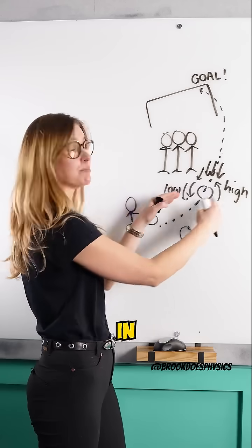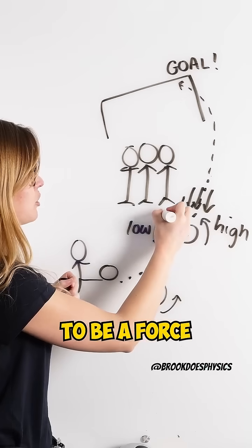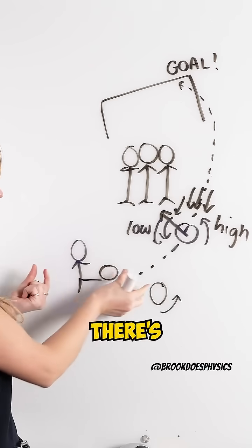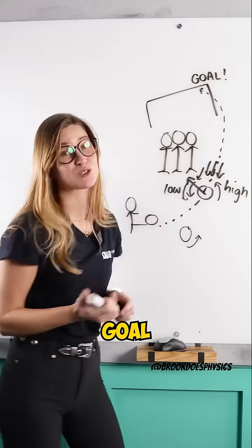And because of these differences in pressures, what's going to happen then? There's going to be a force pushing it towards the area of the lower pressure, which is why we can see there's that curved path of the ball causing him to score his goal.